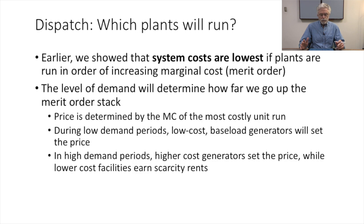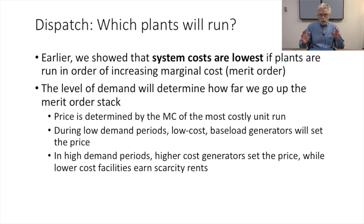The topic for this module is system management, or managing our available grid resources for reliability and affordability. In earlier modules we've talked about the economic principles for deciding which units to run to lower cost, and principles for investing in new plants. What we showed in earlier modules is that system costs are lowest if plants are run in the order of increasing marginal cost, or merit order.